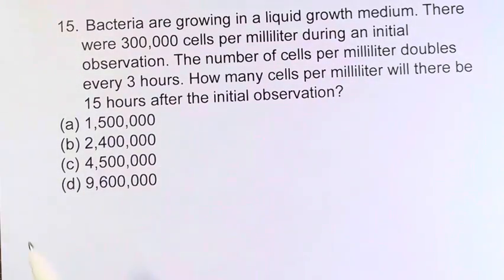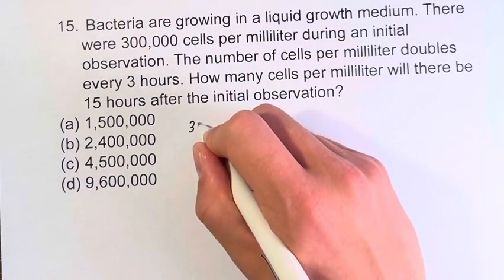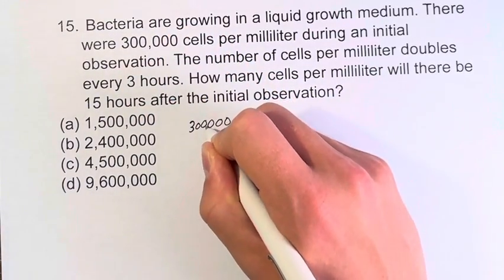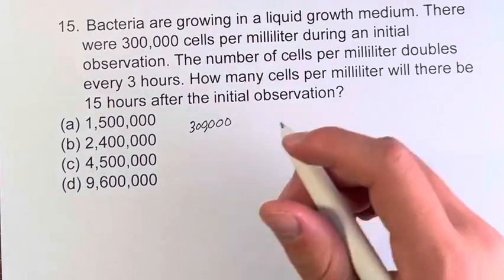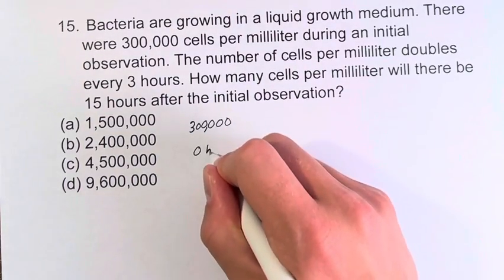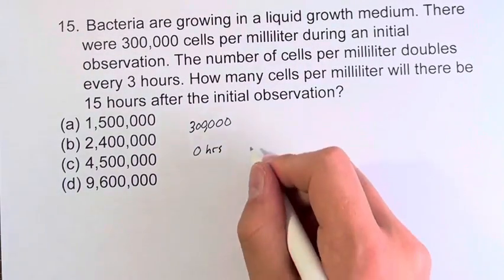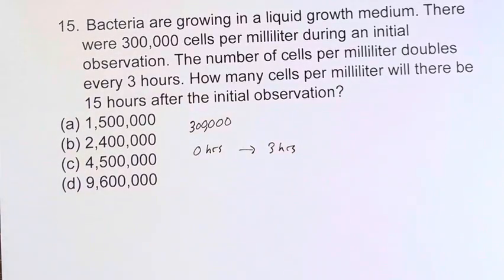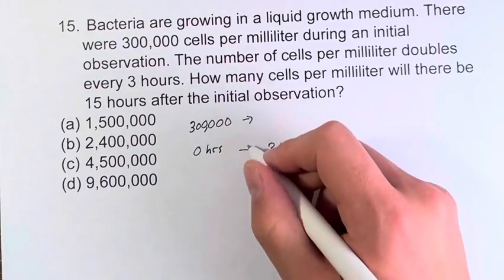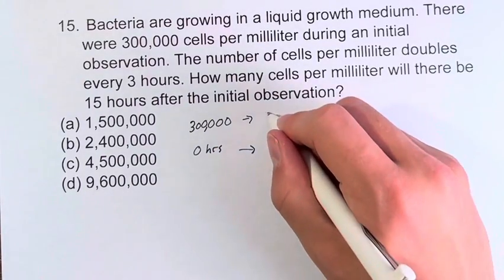So we're told that they're going to double every three hours. In our original state, we have 300,000, and this is at the beginning, we call this zero hours in. Then, three hours later, we know that this is going to double. So we do 300,000 times 2, which is 600,000.